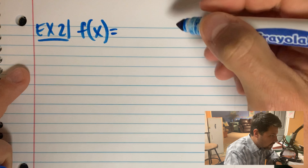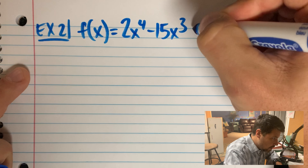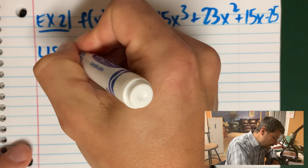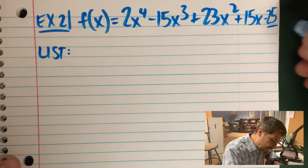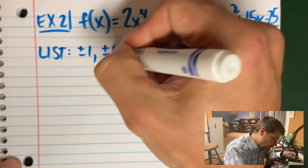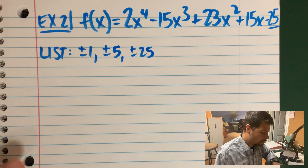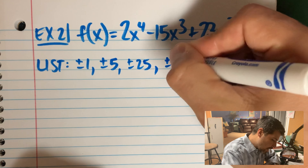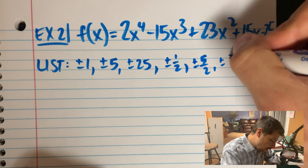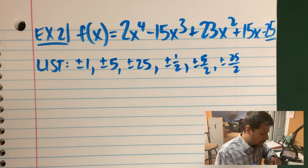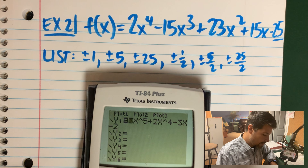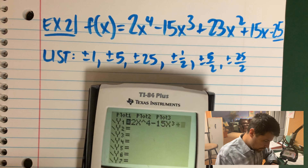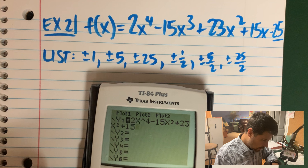We're going to find all of the rational roots of: 2x to the 4th minus 15x to the 3rd plus 23x squared plus 15x minus 25. Let's make our list of all the potential real rational zeros. My factors of the constant 25 are: plus or minus 1, plus or minus 5, and plus or minus 25. I then need to put these over plus or minus q — the factors of the leading coefficient 2. So I have plus or minus 1 half, plus or minus 5 halves, and plus or minus 25 halves.